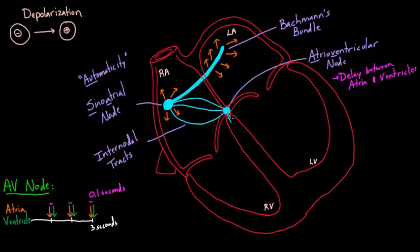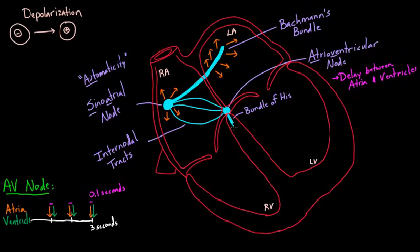Now the signal has delayed by a tenth of a second, but then it continues on to a little area called the bundle of His. Even though it's spelled H-I-S, you don't say 'his' — it's 'hiss,' almost like what a snake does. Then it continues from the bundle of His through one track down here, which is considered the right bundle, and then through the left bundle.